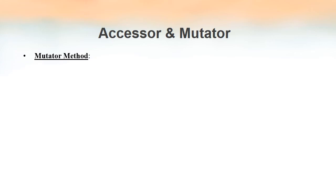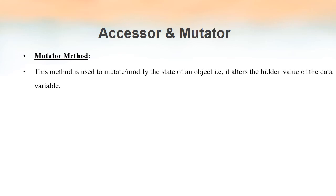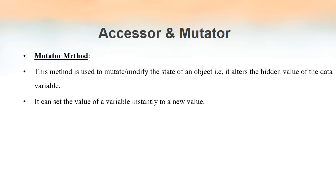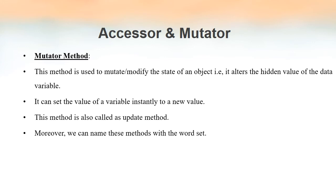On the other hand, we have mutator methods, which are the opposite of accessor methods. Those methods that an object can use to alter or change the value of already existing variables inside the object are known as mutator methods. To indicate that a method is a mutator, we use the word `set`. So accessor is `get` and mutator is `set` — accessor helps the object get a value, mutator helps the object set a value. Since this method can be used to modify existing values, it is also known as an update method.